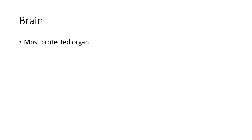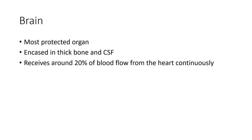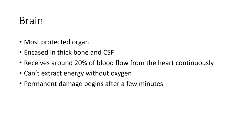Let's focus on the brain first. This is the most protected organ in your body. It's encased in very thick bone of your skull. There are varying layers, as we will learn about in this chapter, as well as CSF — cerebral spinal fluid. It receives about 20% of the total blood flow from your heart, continuously. Your brain can't extract the energy it needs without oxygen, and if you go without oxygen for even just a few minutes, permanent brain damage may begin.